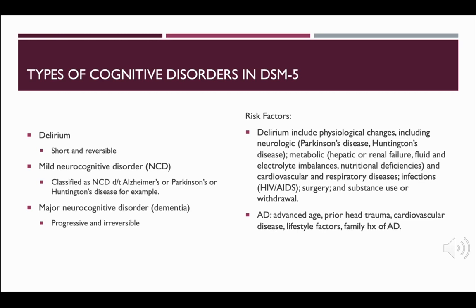When assessing individuals for neurocognitive disorders, we want to assess for risk factors. These include physiological changes such as neurological disorders like Parkinson's disease and Huntington's disease, metabolic causes like hepatic or renal failure, fluid and electrolyte imbalances or nutritional deficiencies, and cardiovascular and respiratory diseases.